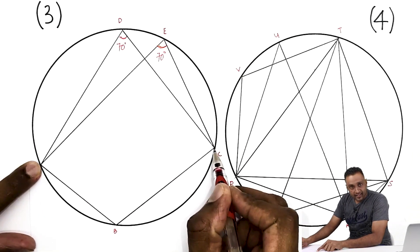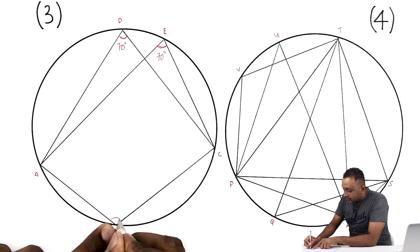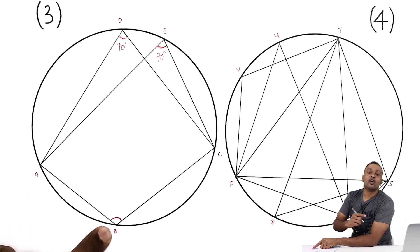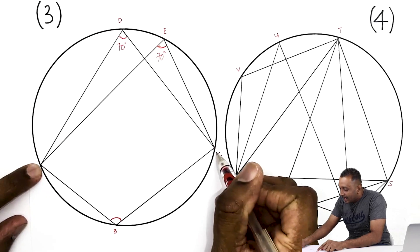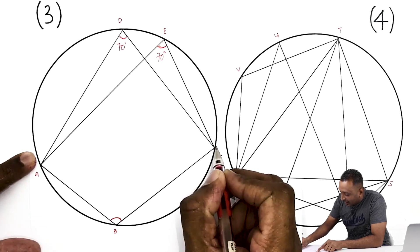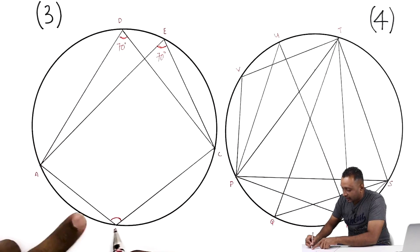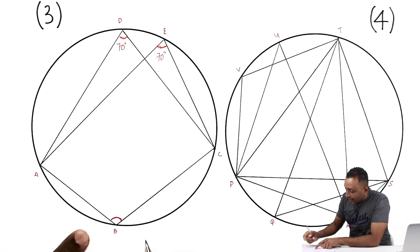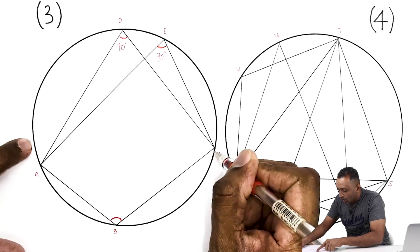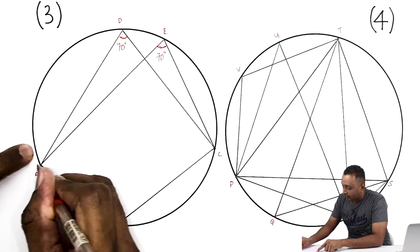Here's the key distinction: angle at B also starts from points A and C, but the arc it corresponds to is the arc on the other side — the major arc AC — not the minor arc AC. So angle ABC is not equal to 70 degrees, even though it starts from the same two points. The angle equals 70 degrees only when both angles subtend the same arc.